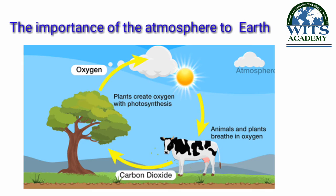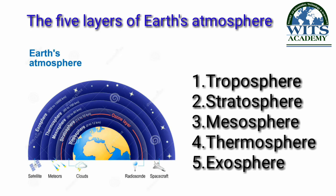Doosri gases jaise carbon dioxide, oxygen aur nitrogen, jisse milkar atmosphere banta hai, jandaron ke liye bahut zaroori hain — khaas taur se podon aur janwaron ke liye. Ab hum padhte hain the five layers of earth's atmosphere.